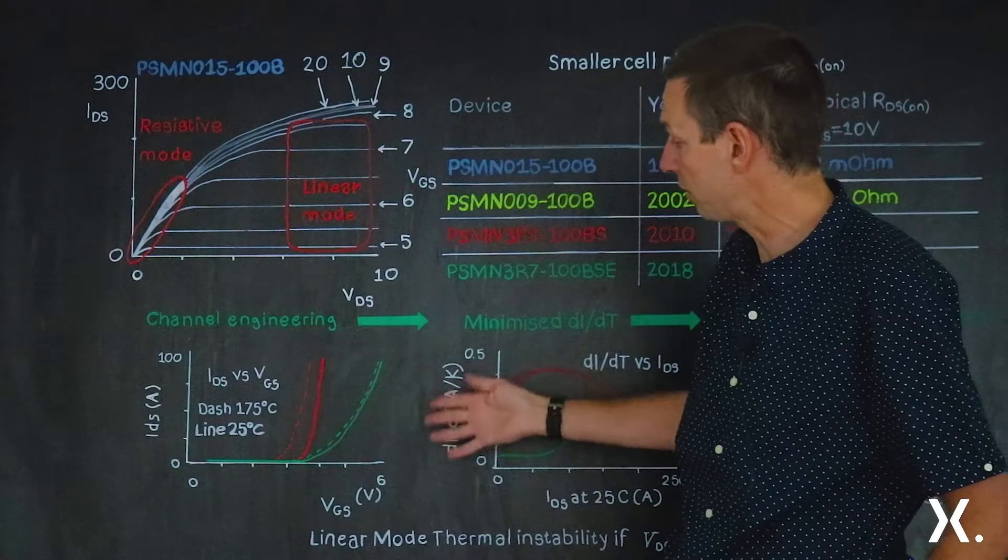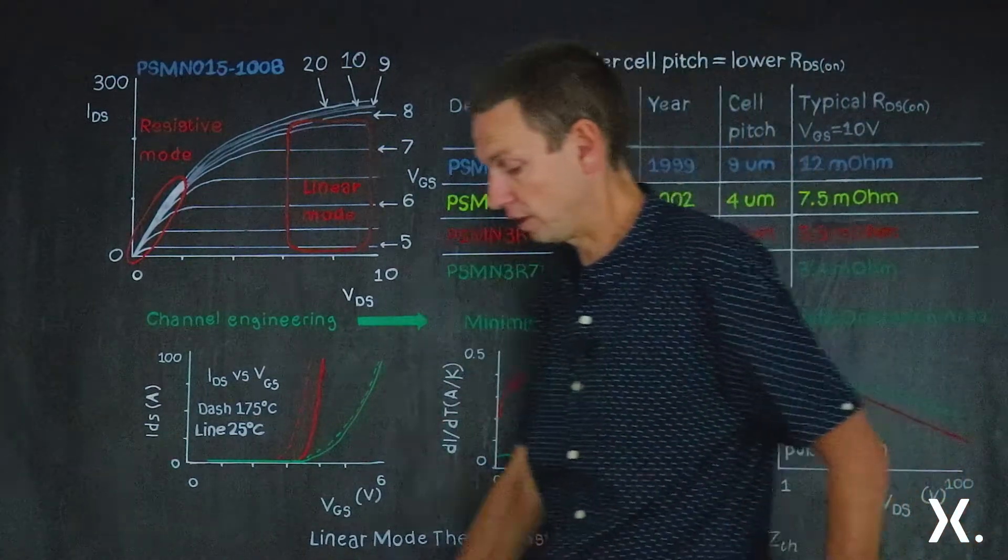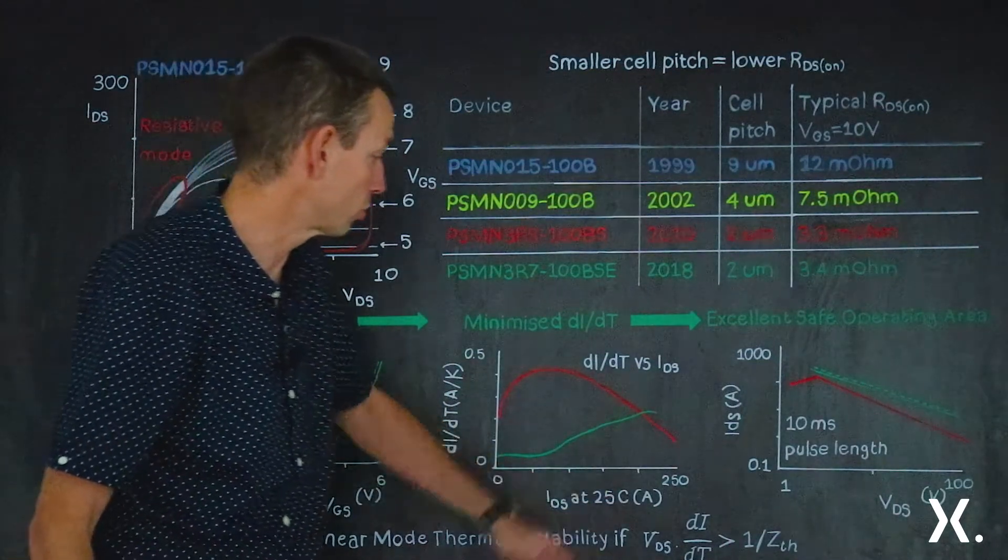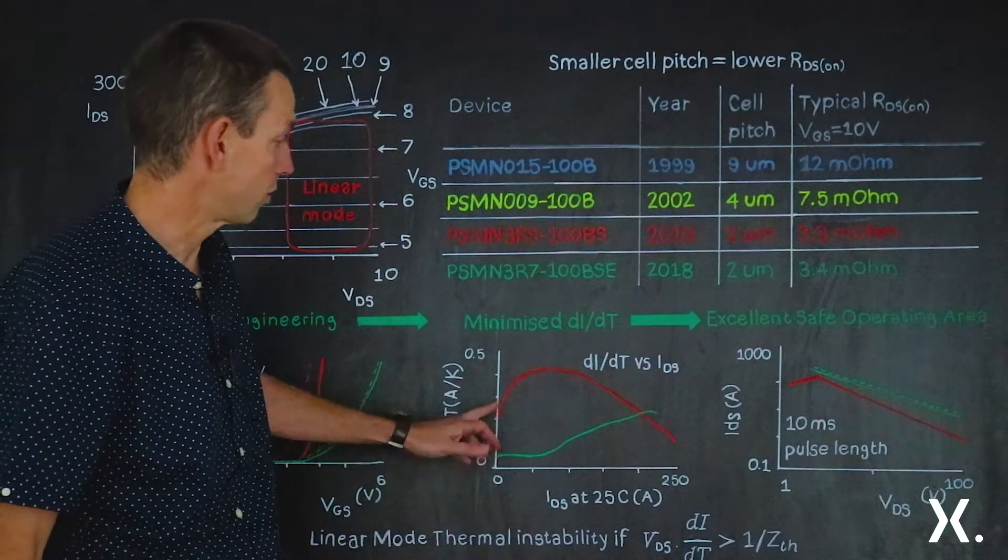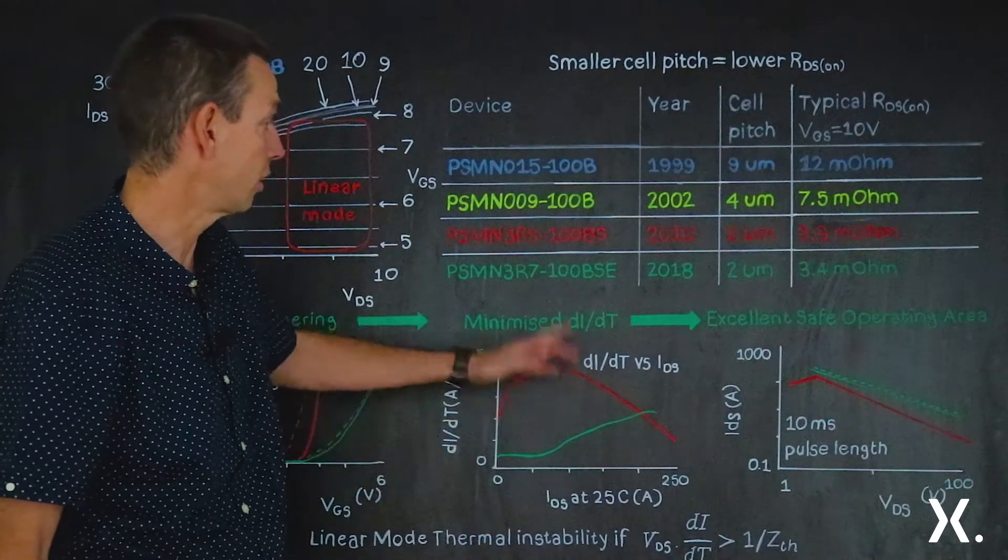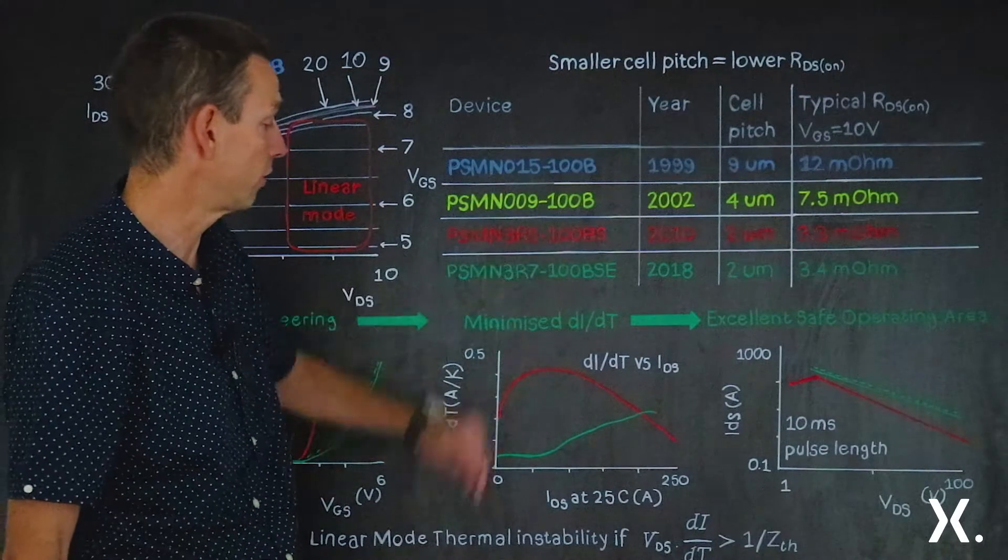So with the channel engineering, we've minimized the DI-body-T. And in the second graph now, you can actually see what the DI-body-T as a function of the source-drain currents looks like. The red data, that's what we saw on the previous chart, a high DI-body-T on the old device.